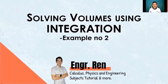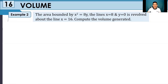Hello to all our viewers. If you are new to my channel, please subscribe and hit the notification bell for more videos. For this day, we will add an example in solving volumes using integration. We have the area bounded by x squared is equivalent to 8y, the lines x is equivalent to 8 and y is equivalent to 0, and it revolves about the line x is equivalent to 16. We are tasked to compute the volume that will be generated by doing this.